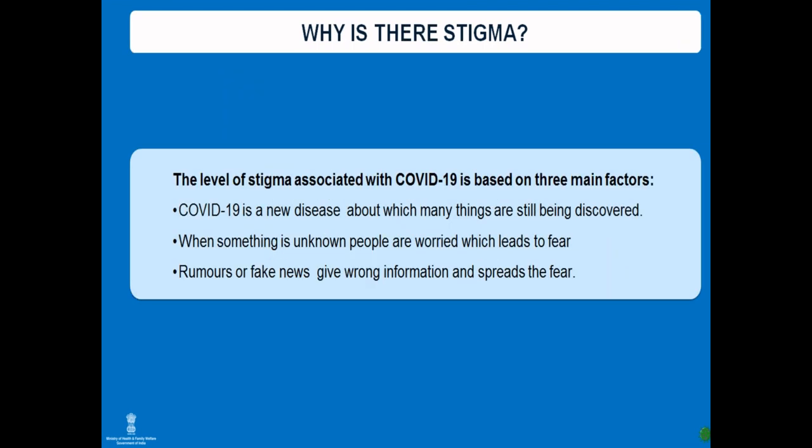The level of stigma associated with COVID-19 is based on three factors: COVID-19 is a new disease with many things still to be discovered; when something is unknown people worry, which leads to fear; and rumors or fake news spread wrong information and further amplify that fear.